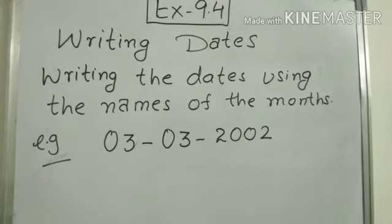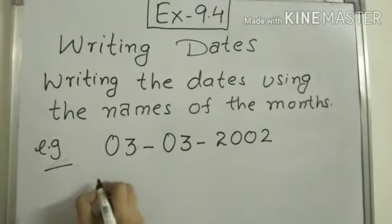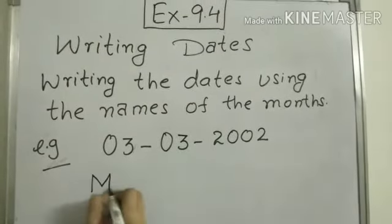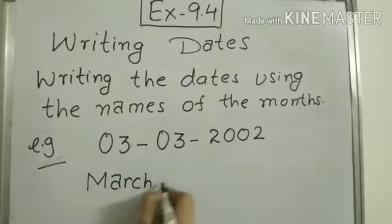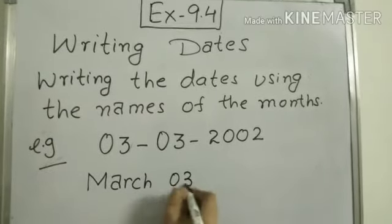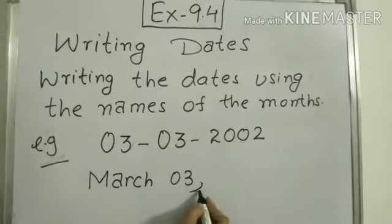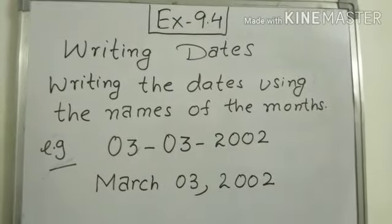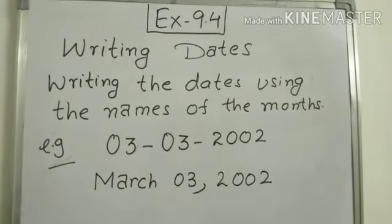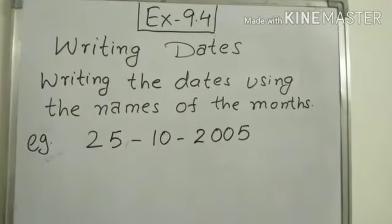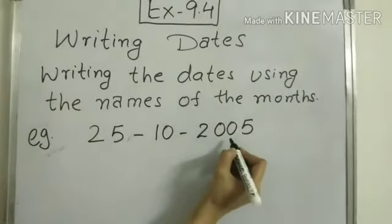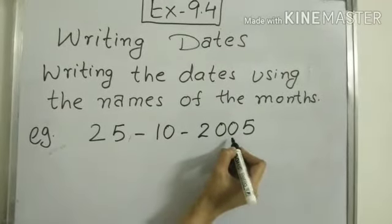March 3, now we will put comma, 2002. Let's take another example, 25-10-2005. So we have to write this date by using months. So this is month, this is date, month